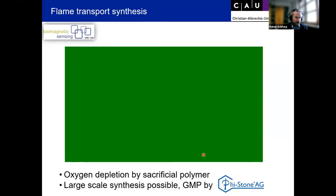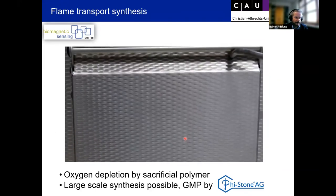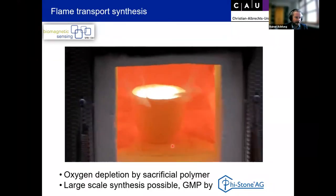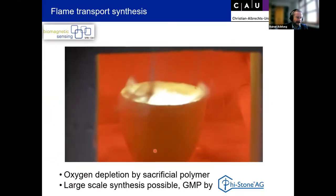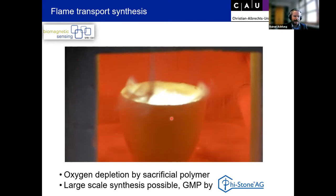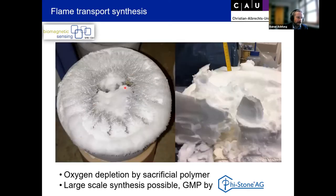How is the growth occurring? You can see here a view inside the oven where we grow these zinc oxide tetrapodal networks. It's fairly simple — you have a crucible where you put in some zinc grains plus a sacrificial polymer, which controls the oxygen depletion inside the oven by burning at the same time. The zinc is molten, evaporated, and can participate. Depending on growth conditions, you get larger or smaller crystals. Our startup company, Phystone, is working on mass-producing these tetrapodal layers on a large scale.